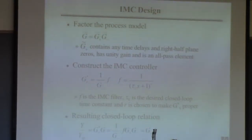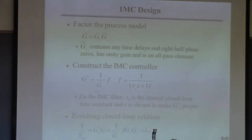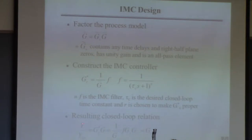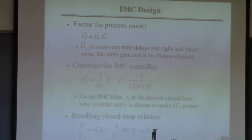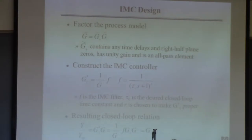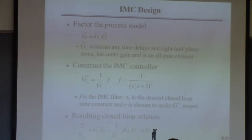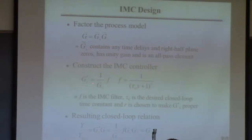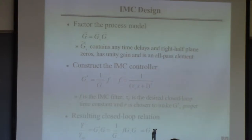This says you've obtained a response between the set point and the output that consists of what you want — F or GD equivalently — plus the stuff you couldn't cancel. So this is the part of the process you couldn't cancel; you just have to live with the fact it's going to be there. For example, if there's a time delay or a right half plane zero in the process, it'll still be there. Even though it's called F, just learn to call it GD — same thing.